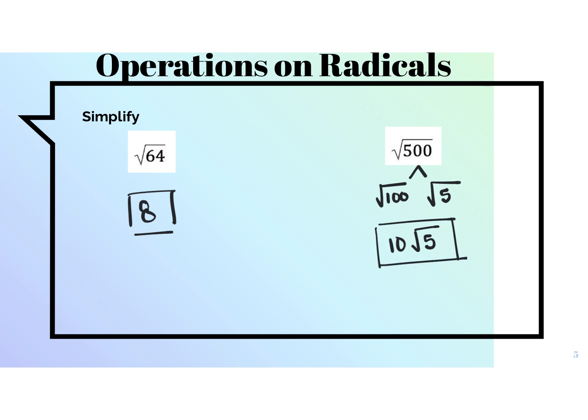You're going to have to do a bunch of simplifications today. Make sure that the first number comes from your perfect squares list, and the second number is whatever you would multiply it by to get back to the original.